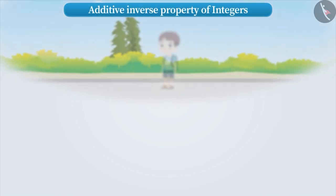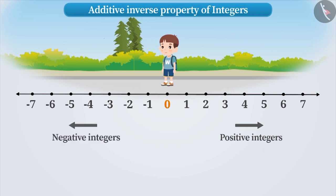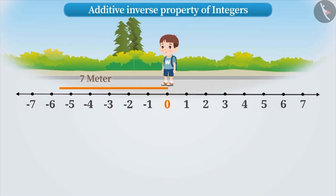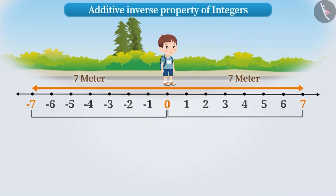Now, let's understand the additive inverse. Suppose you are standing at position 0. The distance towards your right is measured with positive integers, and the distance towards your left is measured with negative integers. If you move 7 meters towards the left, then you will reach minus 7. But if you move 7 meters towards the right, then you will reach plus 7. Here, you have moved equal distances but in opposite directions. That means minus 7 and 7 are at equal distance from 0, but in opposite directions.